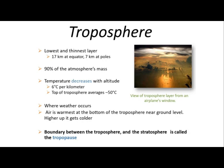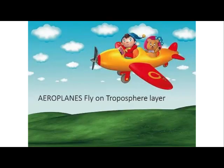Let's start with the troposphere. It's the lowest and the thinnest layer, containing 90% of the mass of the atmosphere. The temperature decreases with altitude. This is where weather occurs. The air is warm at the bottom of the troposphere near ground level, and higher up it gets colder. The boundary between the troposphere and the stratosphere is called the tropopause. Airplanes fly in the troposphere layer.